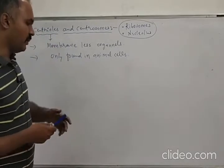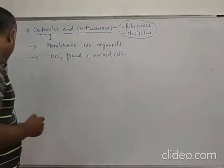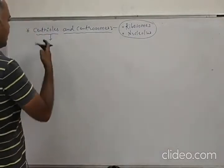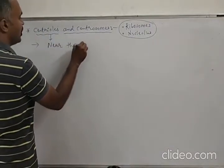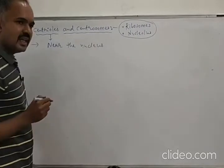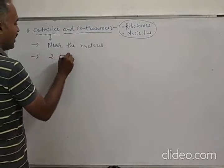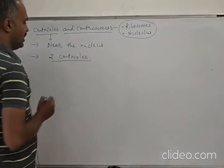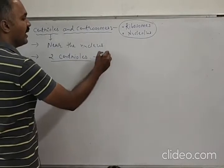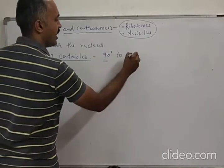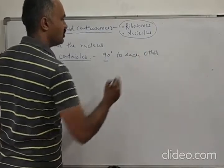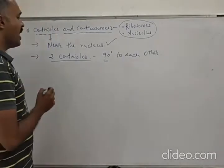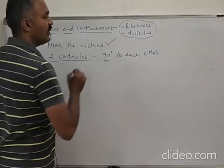Now let's draw the structure of the centriole. Each centriole is located near the nucleus. Generally two centrioles are located near the nucleus and they lie at 90 degrees to each other.